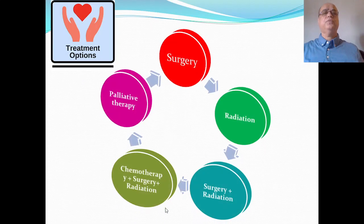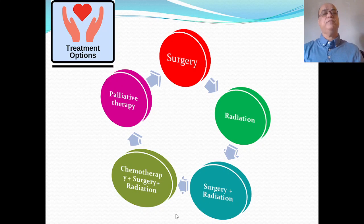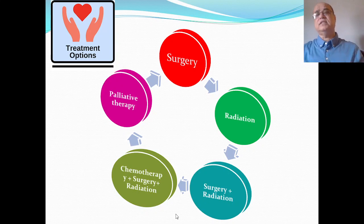The treatment options for any malignancy include surgery, radiotherapy, surgery plus pre- or post-op radiotherapy, or a combination — that is surgery with chemotherapy plus radiation, or chemo-radiation. In very advanced tumors, such as stage 4B oropharyngeal carcinomas where the tumor is unresectable, we have no option except palliative treatment.